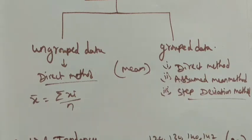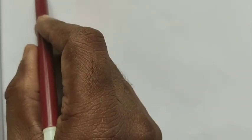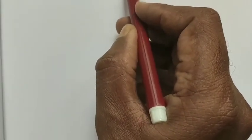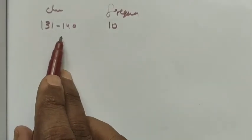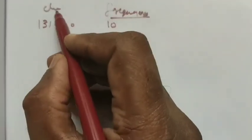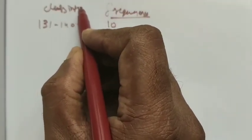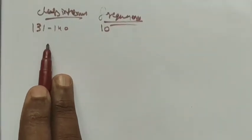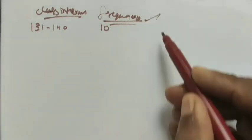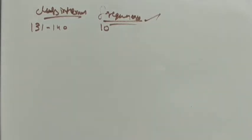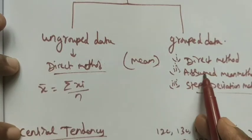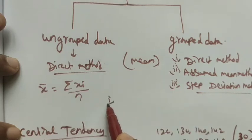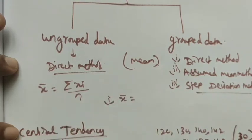For the grouped method, we have frequencies. For example, if the given data is very large, we take a class interval such as 131 to 140, and for example 10 students fall in that range — so 131 to 140 is the class interval and 10 is the frequency. Arranging the given data in this form is called grouped data. We have the formulas for the direct method, assumed mean method, and step deviation method. For the direct method, x̄ = Σxi·fi / Σfi, where we multiply by the frequency.